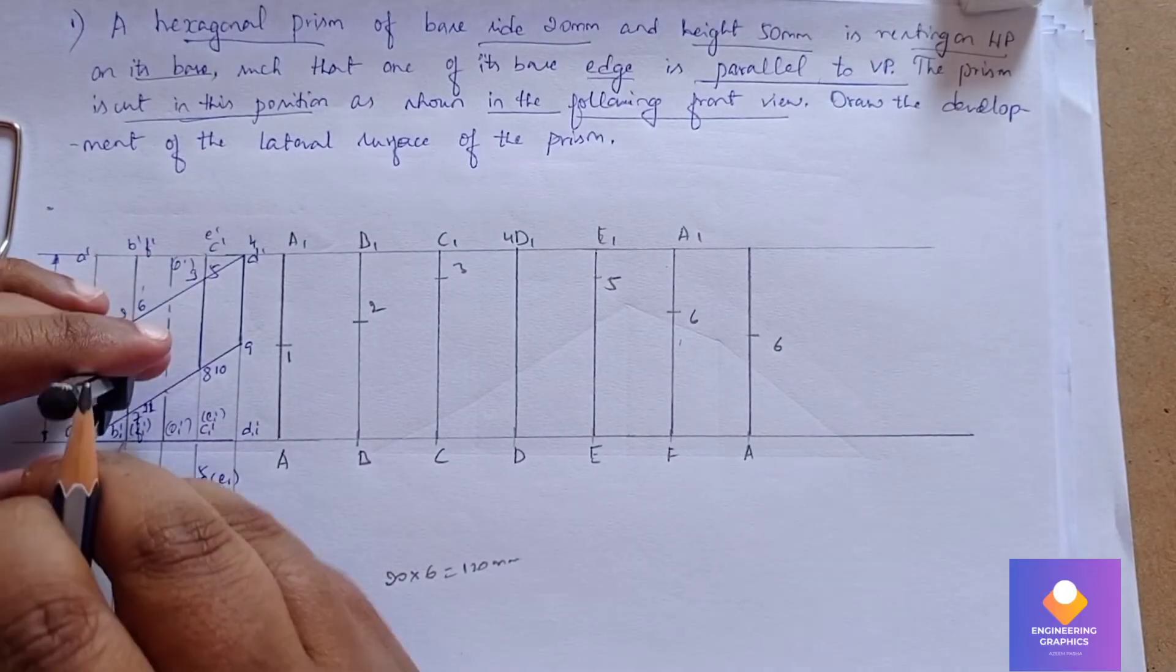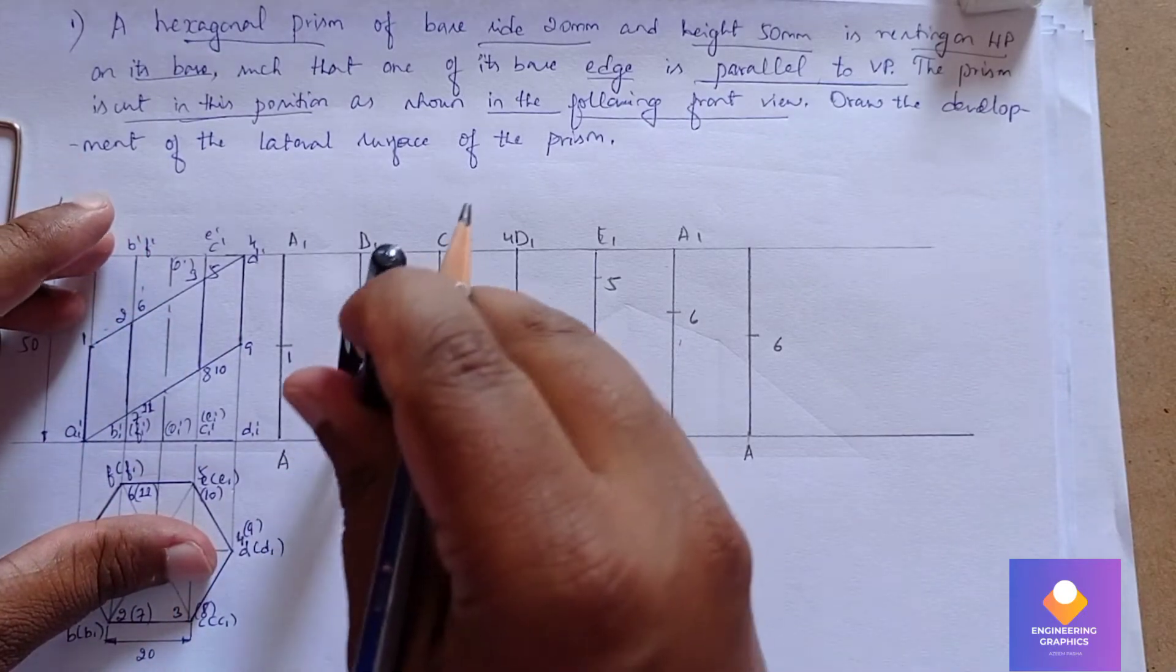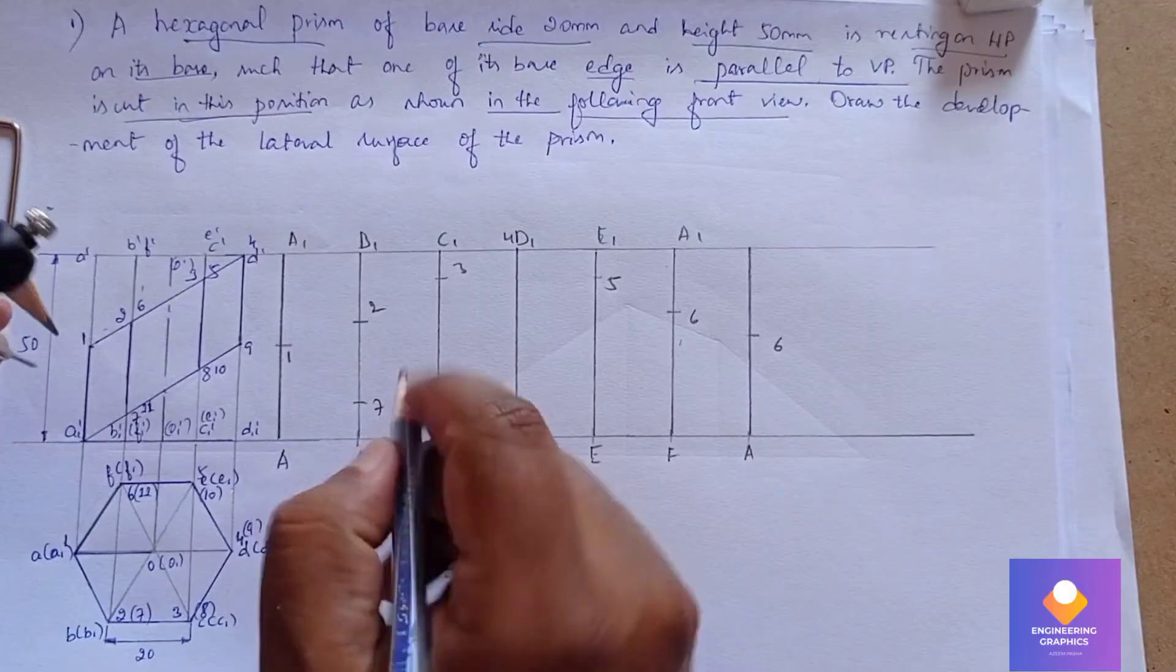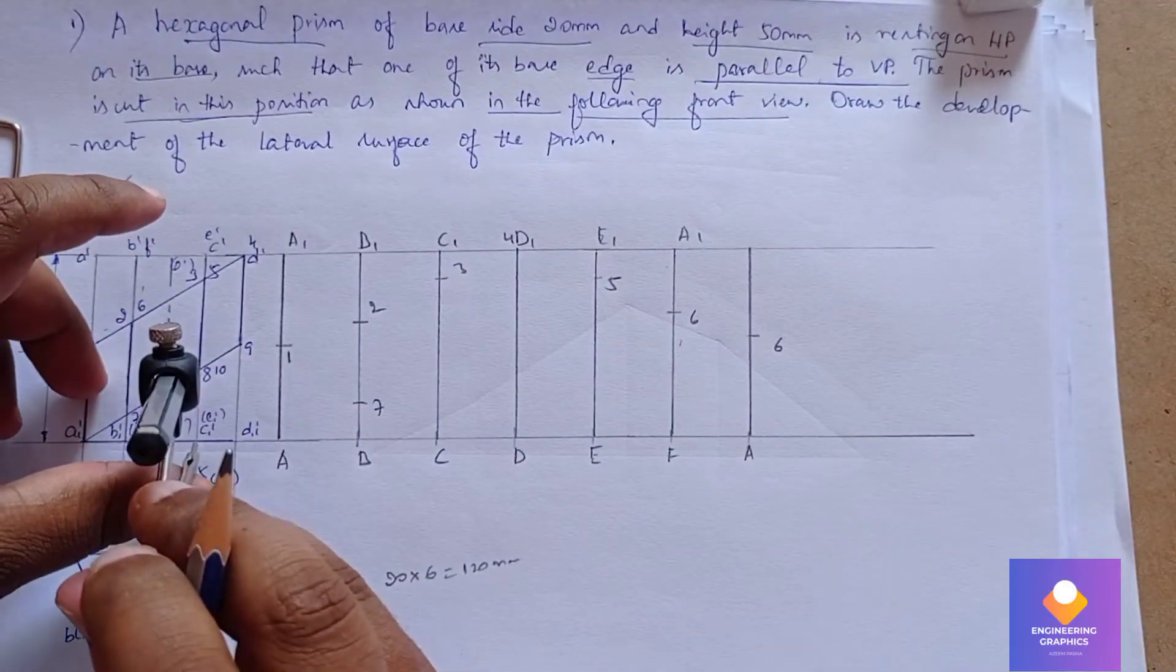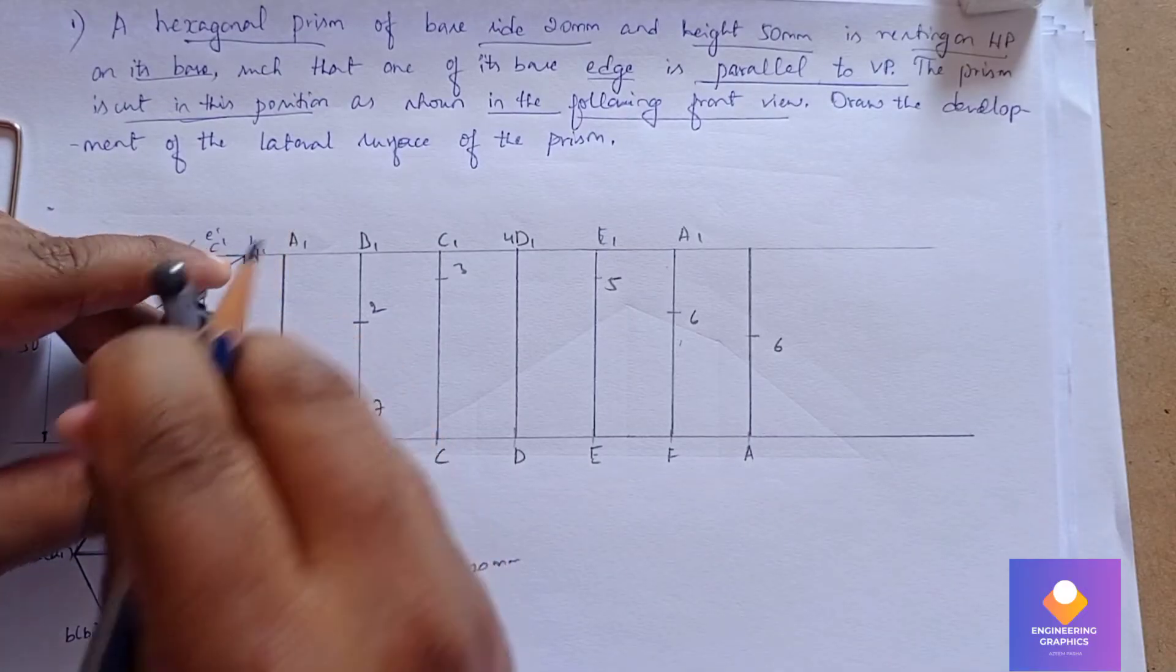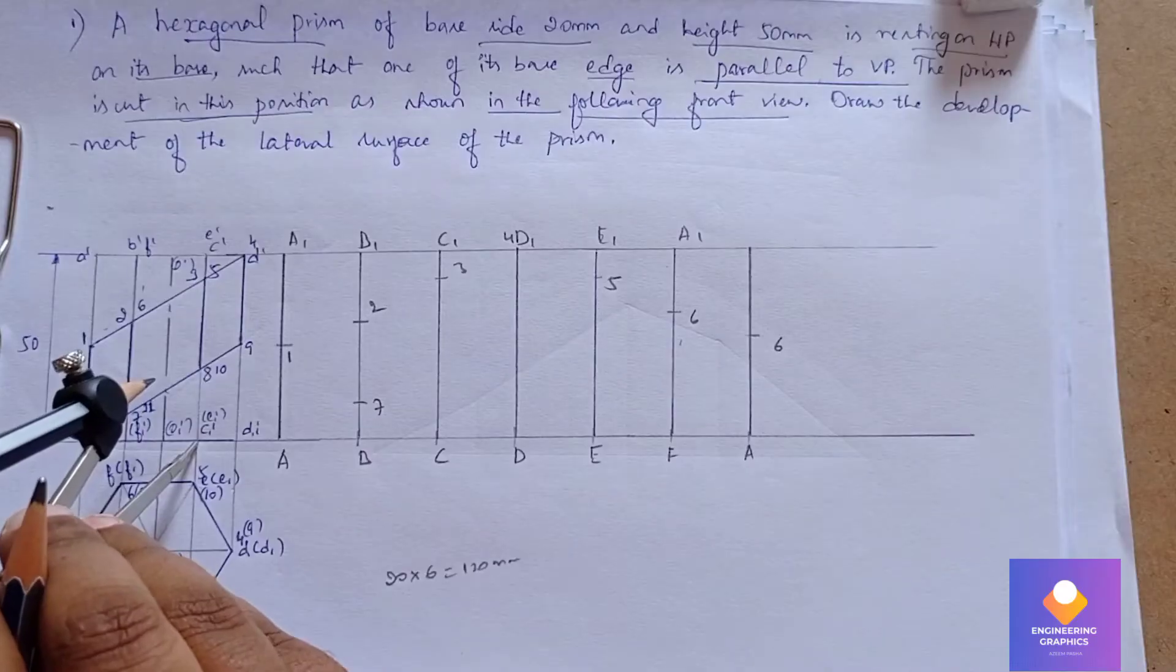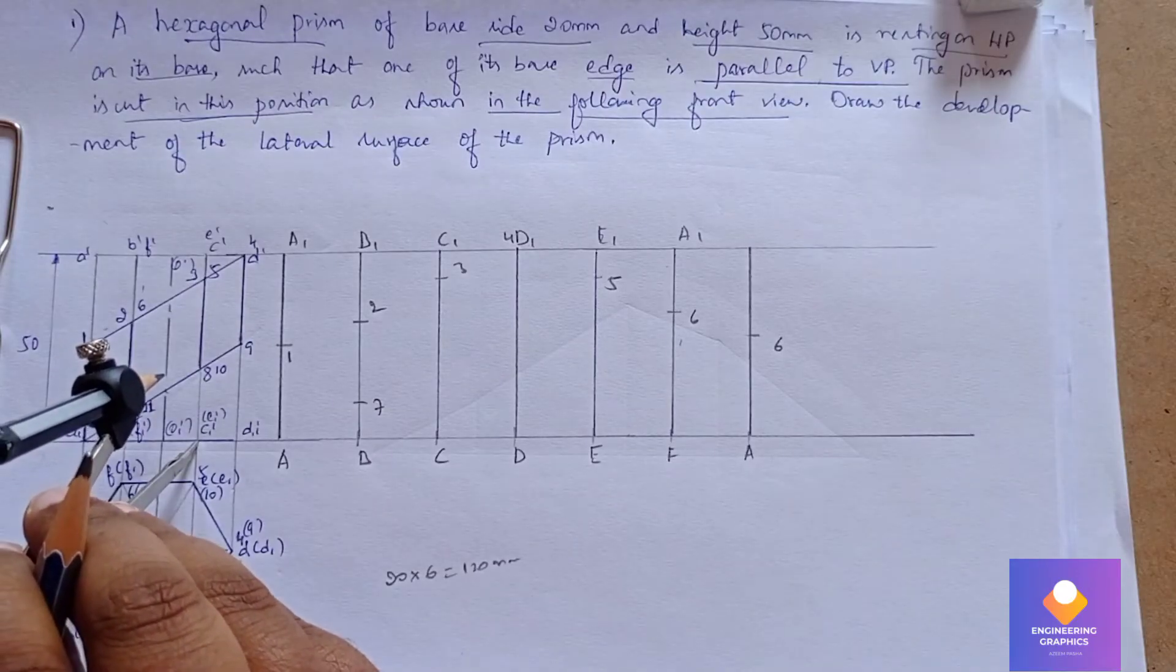Now again we need to measure for the bottom face. On the vertical edge B it is point 7. Now we need to measure 48 on the vertical edge C. Measure length from C to 8.